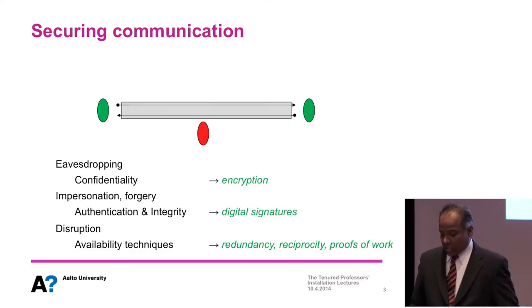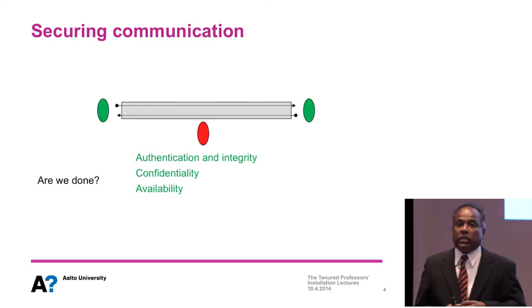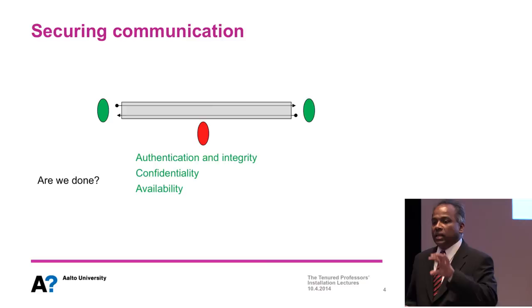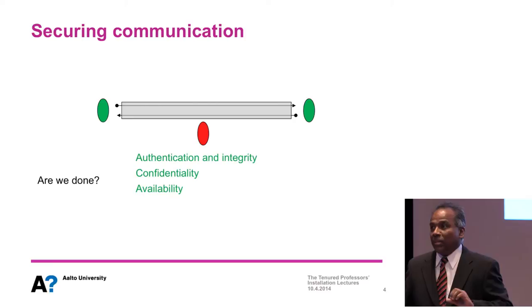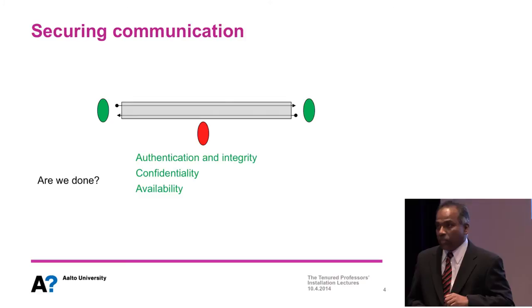One could ask: if we know how to apply cryptographic and distributed systems techniques, are we done? The answer is no — not because we haven't solved problems in cryptography, but because the adversary model implicitly assumes that the endpoints are secure. The endpoints — meaning the devices or computers users use — are assumed not to be compromised by the attacker.